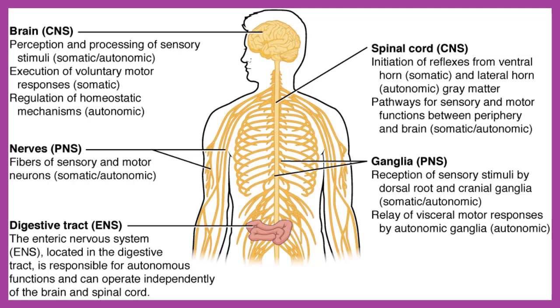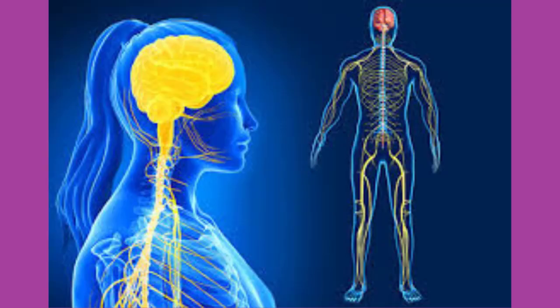There are two ways to consider how the nervous system is divided functionally. First, the basic functions of the nervous system are sensation, integration, and response. Secondly, control of the body can be somatic or autonomic — divisions largely defined by the structures involved in the response. There is also a region of the peripheral nervous system called the enteric nervous system that is responsible for a specific set of functions within the realm of autonomic control related to gastrointestinal function.